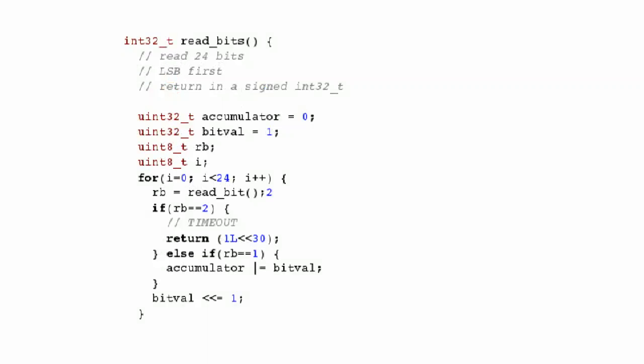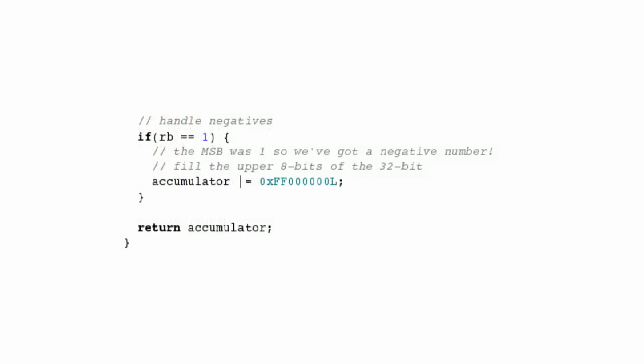Then there's a read bits function which calls read bit 24 times and sticks the result into a single signed 32-bit integer variable. The only tricky part here is dealing with 2's complement notation, which is how negative numbers are often expressed in binary.